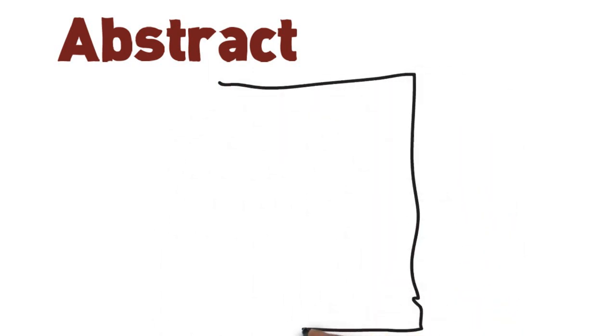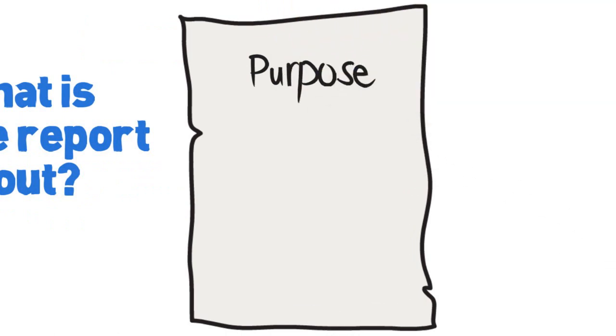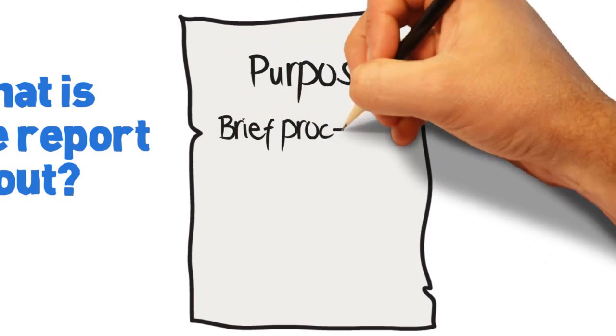Next on our list is the abstract. Think of the abstract as a summary of the report—it tells what the report is about. Your abstract should include the purpose of the experiment. You can state that clearly by saying 'the purpose of this experiment is...' or you can be creative.